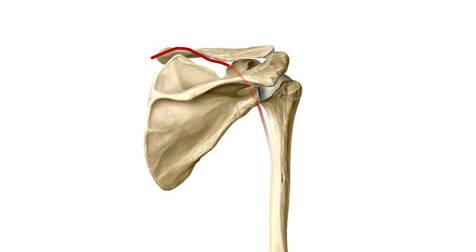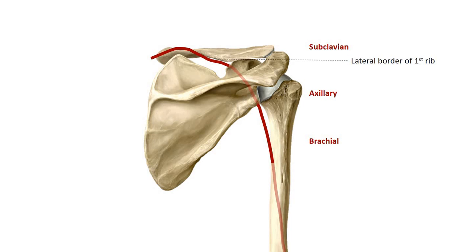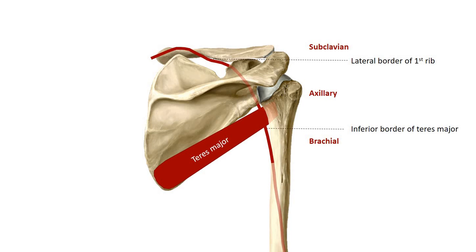This vessel is continuous but has three different names. First, it is called the subclavian artery, then the axillary, and then the brachial artery. The defining boundary between these portions are the lateral border of the first rib and the inferior border of teres major.